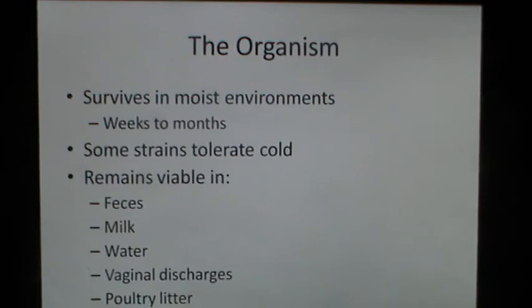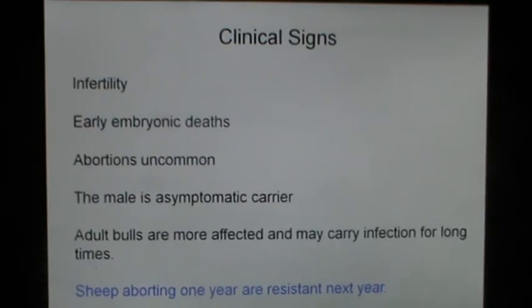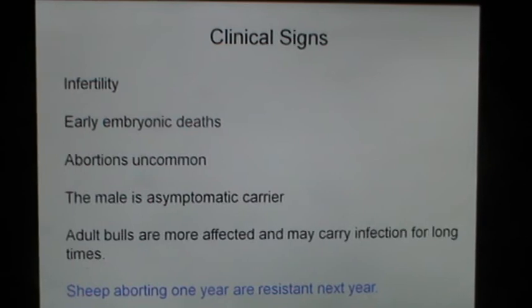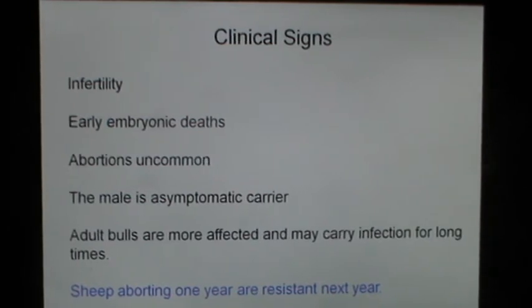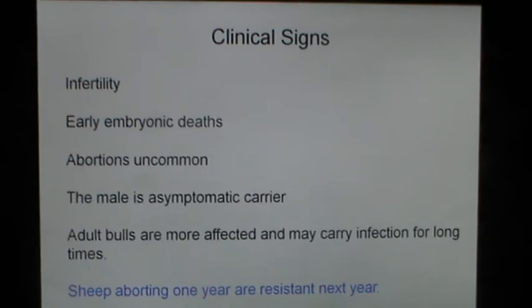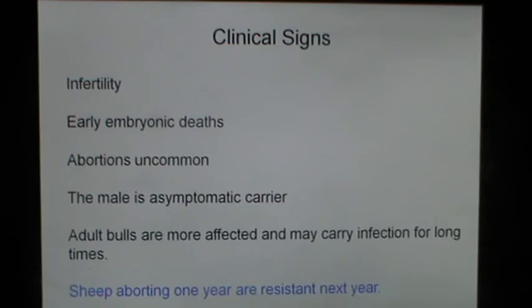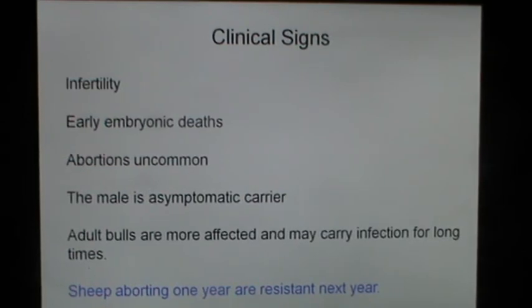Campylobacter survives in moist environments for weeks to months. Some strains tolerate cold and remain viable in feces, milk, water, vaginal discharges and poultry litter. The clinical signs include infertility and early embryonic deaths, but abortions are uncommon. The male is an asymptomatic carrier in this disease. Adult bulls are more affected and may carry infection for long periods. Sheep aborting one year are resistant the next year.